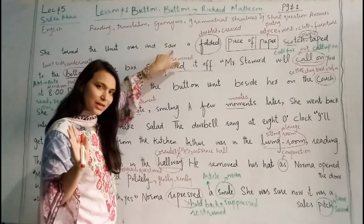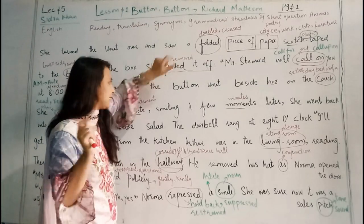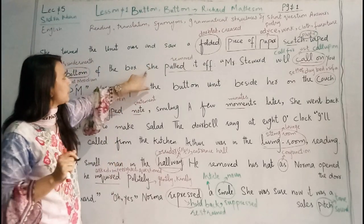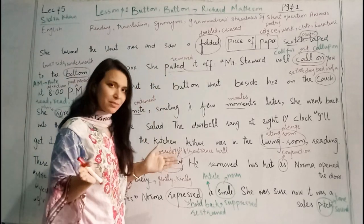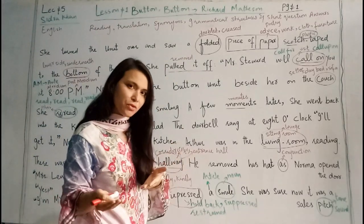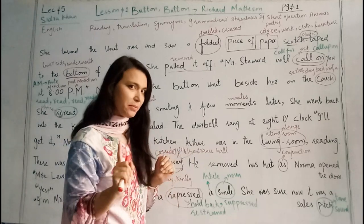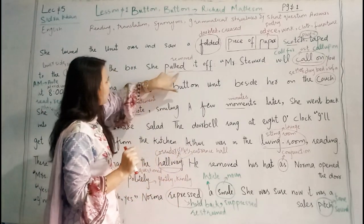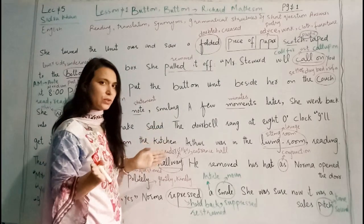Now we are going to move towards the next sentence. She pulled it off. Pulled off means lift off, remove, take off. She pulled it off and removed.